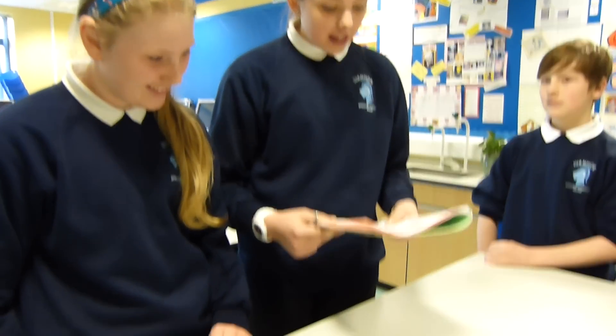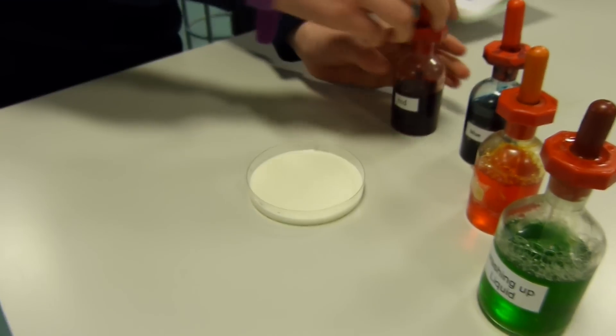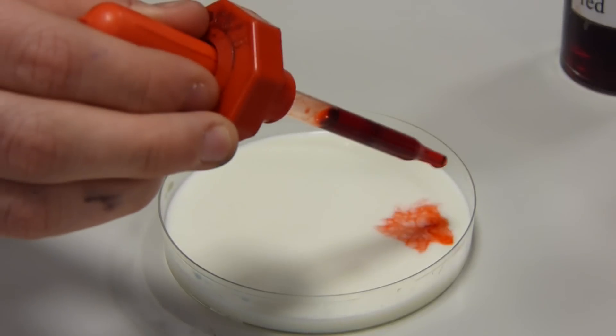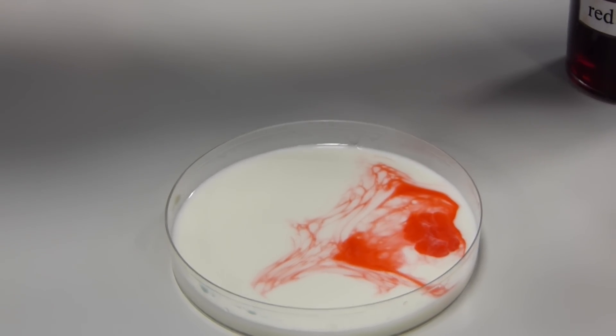We've poured some milk into a petri dish and now we're going to carefully add two drops of red food colouring from a pipette. Make sure they're on one side of the petri dish.